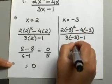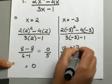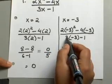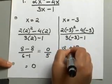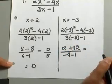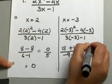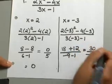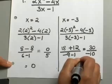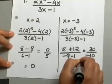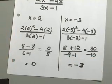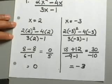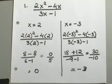Negative 3 squared will give you 9. 9 times 2 gives you 18. Negative 4 times negative 3 will give you a positive 12. On your denominator, you have 3 times negative 3, which will be negative 9 minus 1. That will give us 18 plus 12 is 30, and negative 9 minus 1 is negative 10. And 30 divided by negative 10 gives us negative 3 as the answer. So all we did here was evaluate what the value of our expression would be when X equals 2 or X equals negative 3.